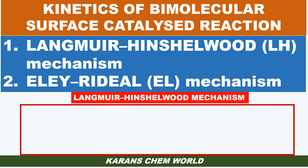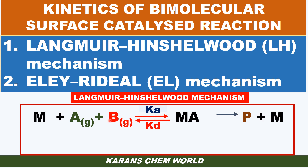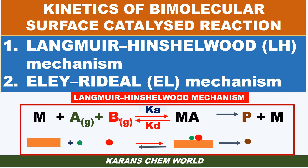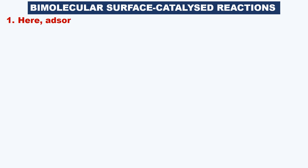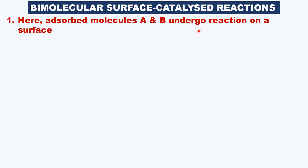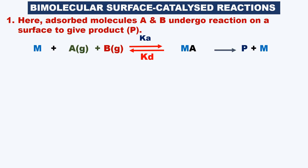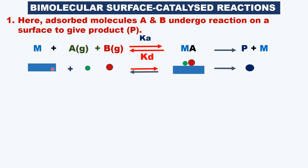What is the scheme of the mechanism? Here you see both A and B molecules are adsorbed on the surface, which then undergo reaction to give products. Let us derive the rate expression and the kinetics of bimolecular surface catalyzed reaction. In a bimolecular surface catalyzed reaction, there are two molecules A and B, and they are adsorbed on the catalytic metal surface.